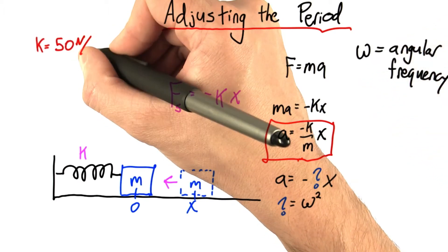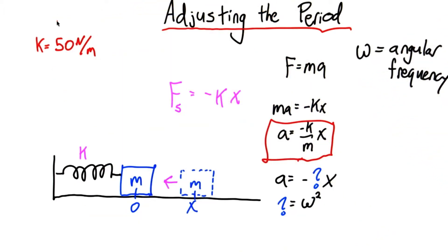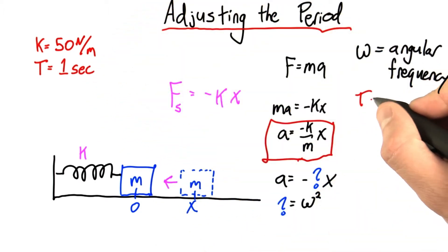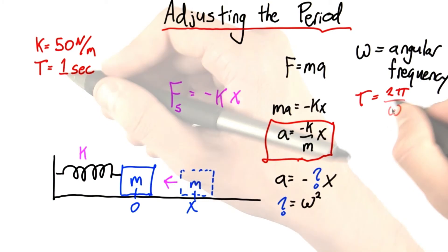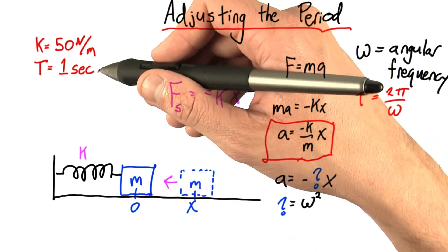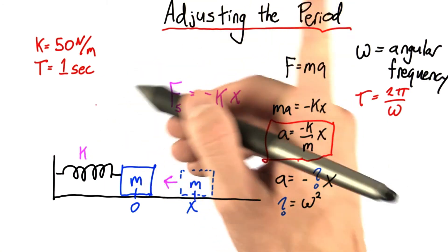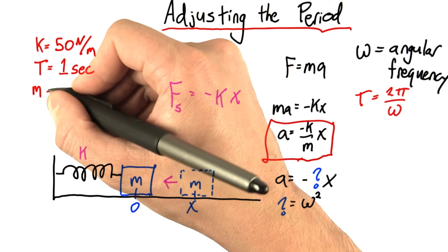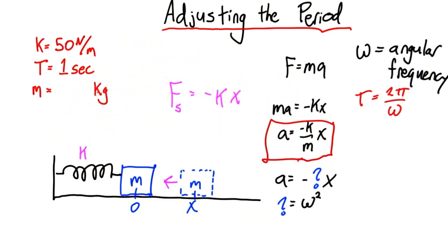Now let's say you have a spring, spring constant 50 newtons per meter. And let's say you want your period to be equal to one second. And remember, period is equal to 2 pi over omega. And why do we want one second? Well, we're trying to design a clock here. Of course we want a one second period. We want tick, tock, tick, tock. So the question is, with this spring and this desired period, what mass do we need? Enter your answer here in kilograms.